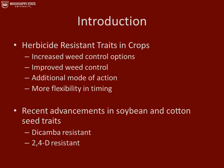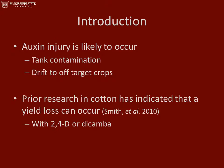With herbicide-resistant traits in cropping systems, we see increased weed control options as well as overall improved weed control. We also have additional modes of action in the field and more flexibility in application timing. Some more recent advancements in soybean and cotton seed traits are the dicamba and 2,4-D resistant seed traits. With these auxin-resistant seed traits, we're going to see large broadcast applications of auxin being made, and we believe that auxin injury is likely to occur due to tank contamination and/or drift to off-target crops.